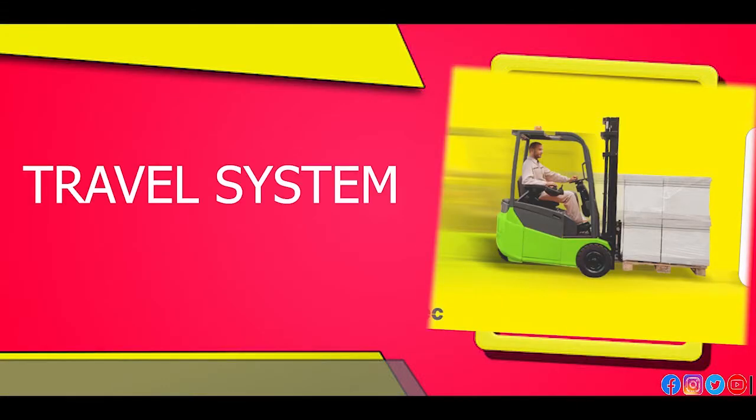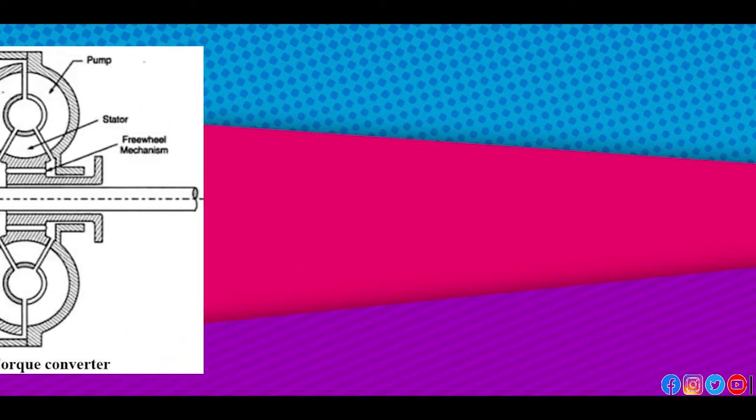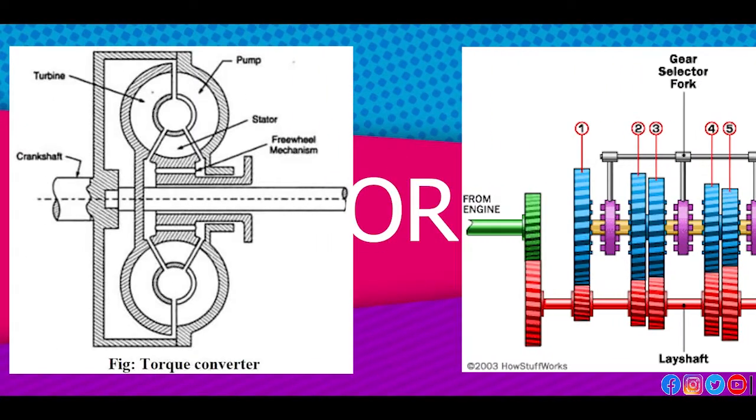The first system is the travel system. By using this system, the vehicle moves from one place to another. The forklift is powered by either an engine or an electrical source. If powered by a battery, the electrical power is straight away connected to the wheels. If powered by a combustion engine, a transmission system exists — consisting of a torque converter or transmission system to power the wheels.